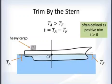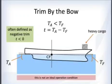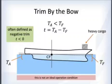Trim by the stern means the stern is down further in the water — heavy cargo aft makes the bow pop up. Trim by the bow means heavy load is forward, so the bow is deeper in the water. Trim by the bow is often defined as negative trim.